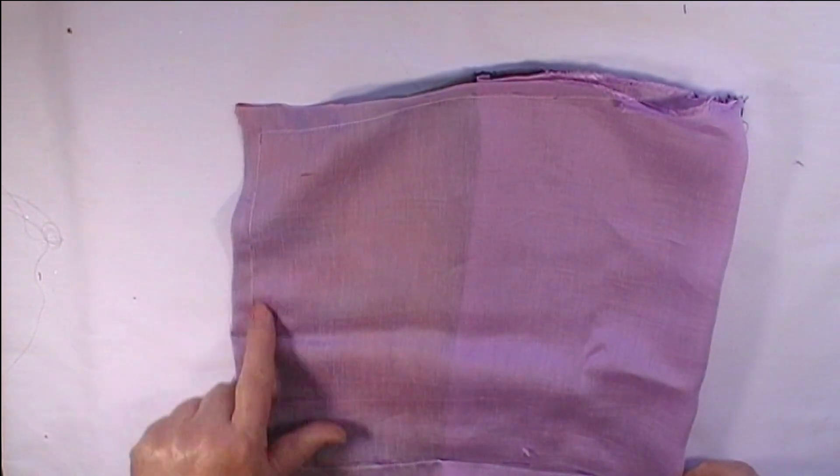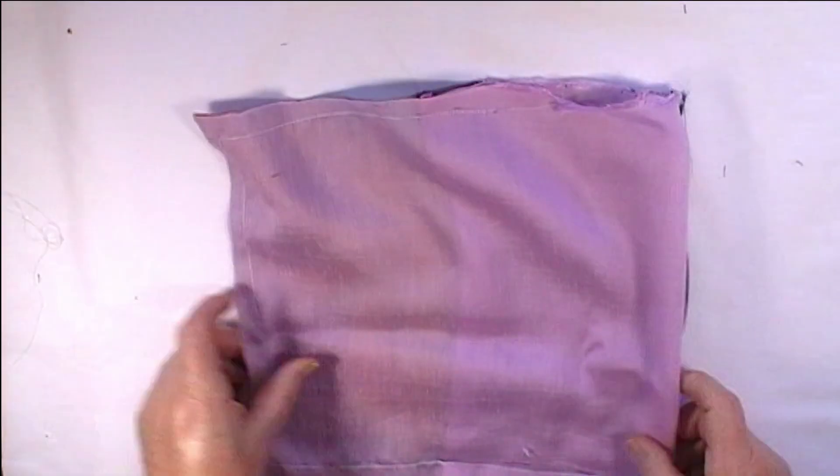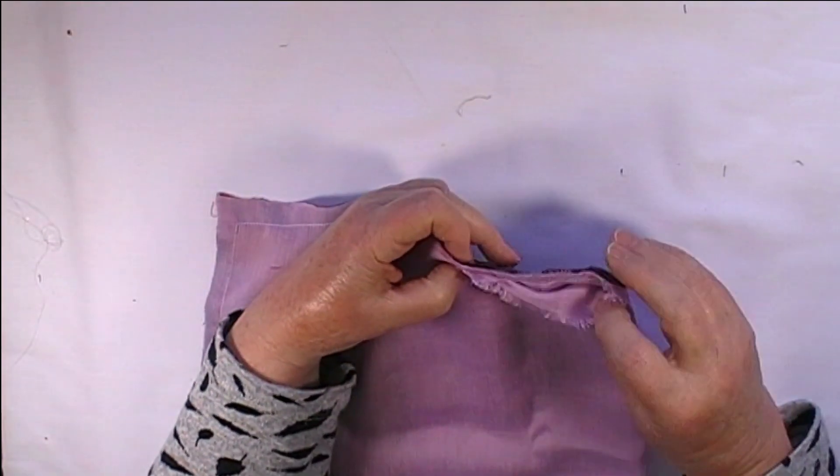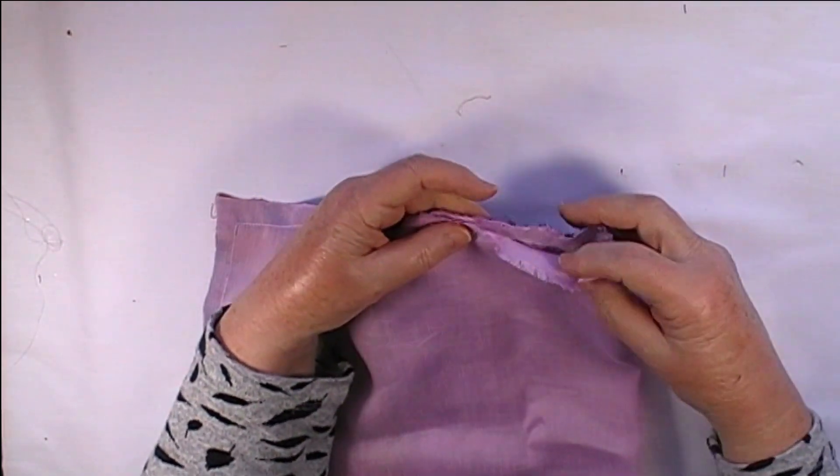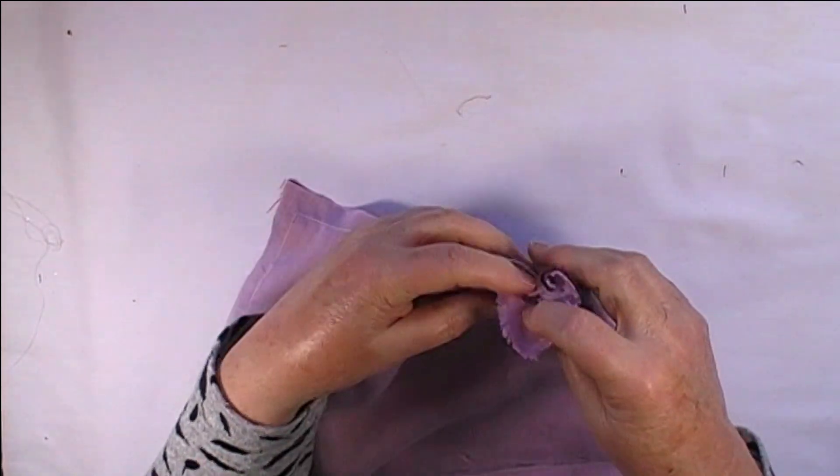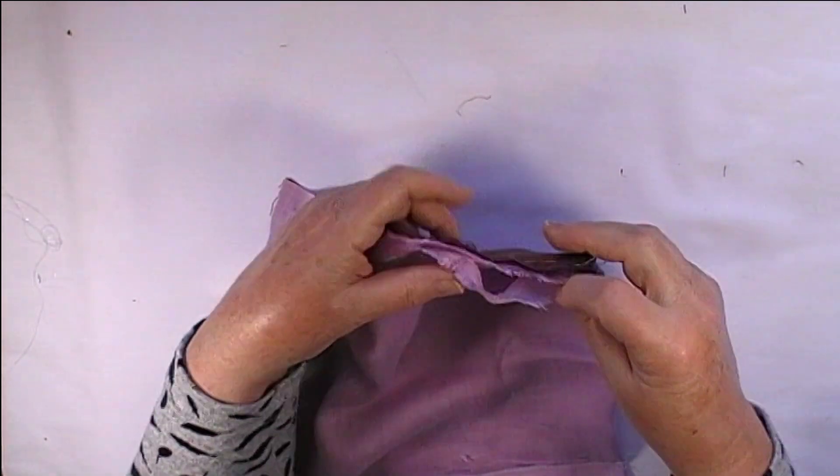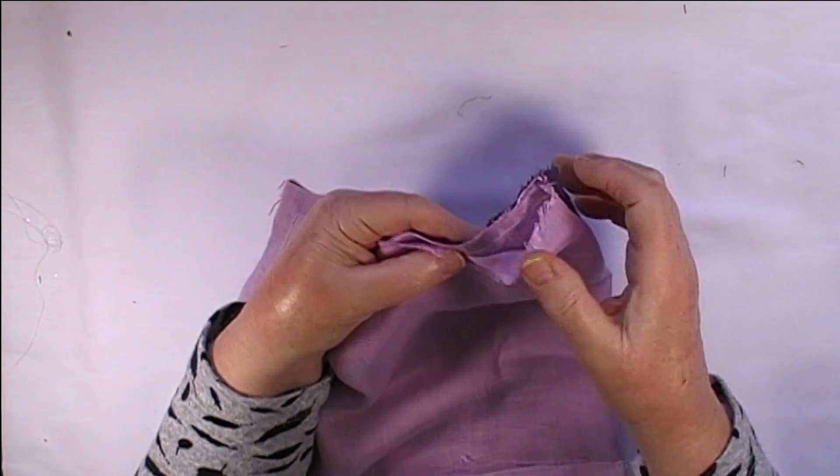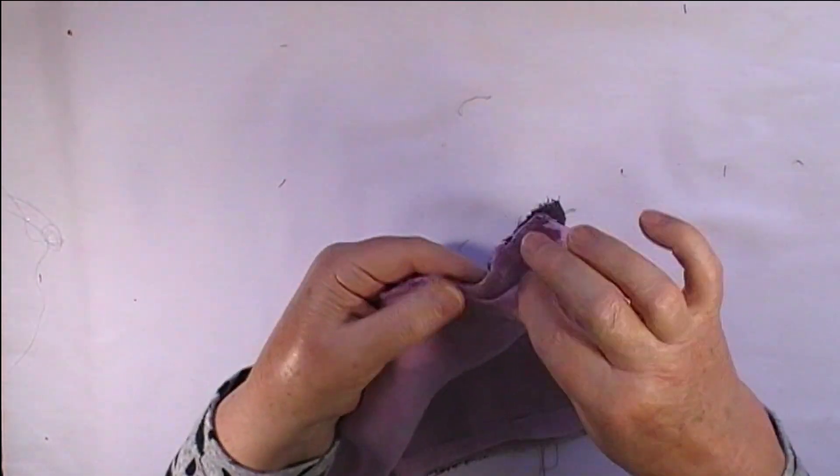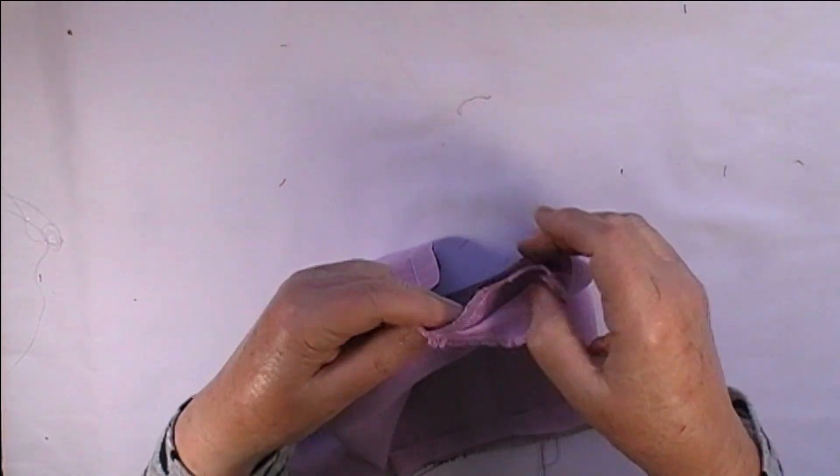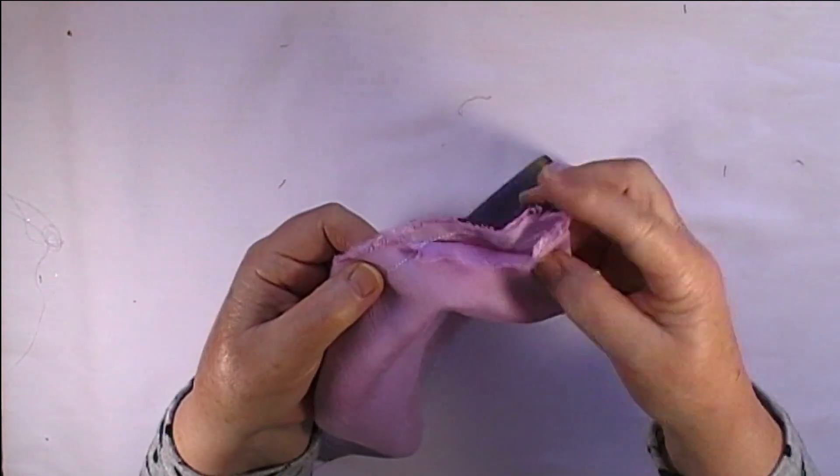Sewed along there, along there and down there but I stopped about two inches or just over two inches from the bottom and moved one piece of the lining to the side and just sewed the one piece of lining down which created a hole in effect. I hope you can see that.